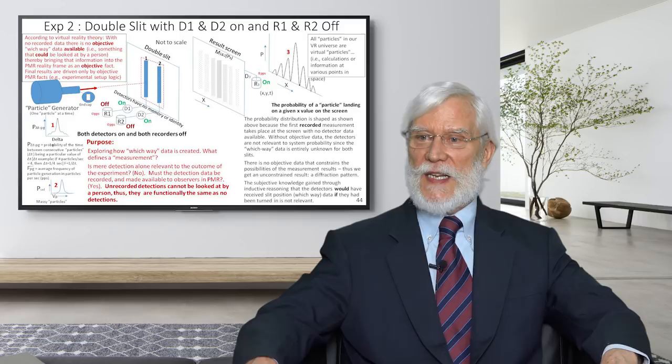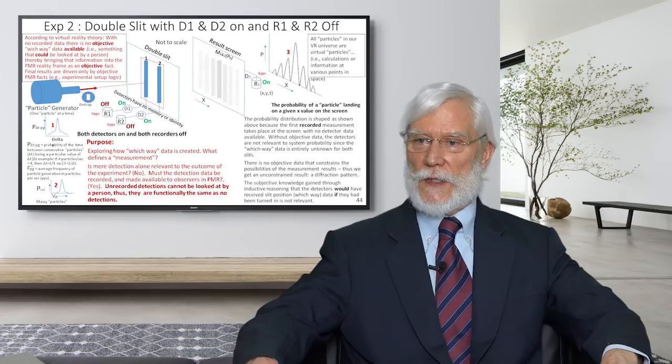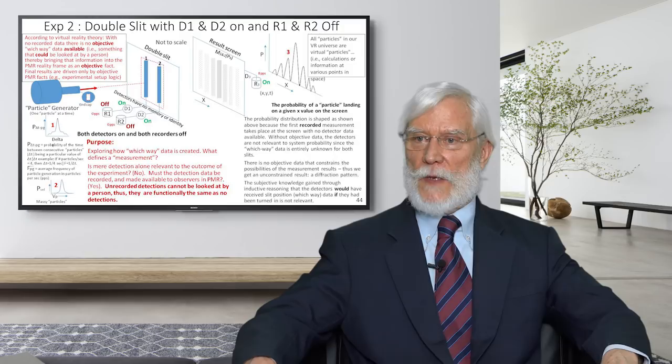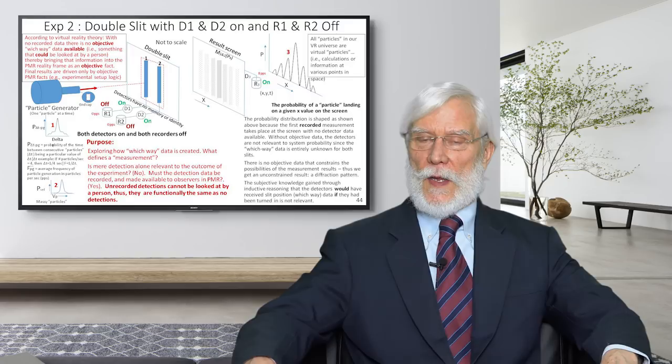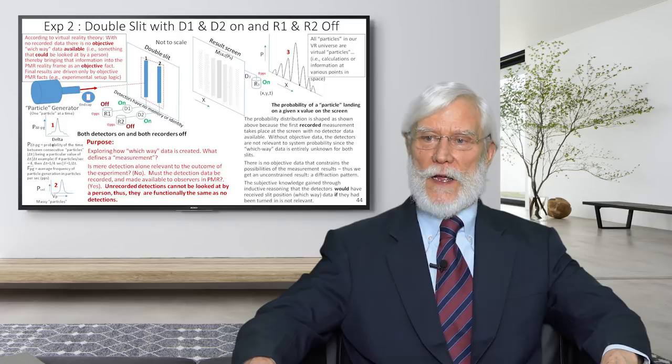Experiment 2 probes the idea of the observer and what the observer observes. Does the observer need to observe recorded information? If a particle is detected, is that enough to create the which-way data?